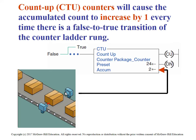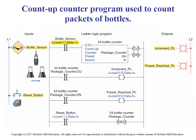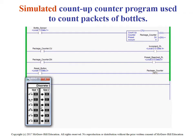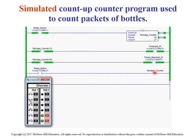For the count up counter, we're at CTU using the same address. This should look familiar from the previous lecture. We're triggering that counter and the accumulated value increments. When triggering the count up and it reaches 24, the done bit will turn on, turning on the pilot light. Then you hit the reset button and it goes back to zero.